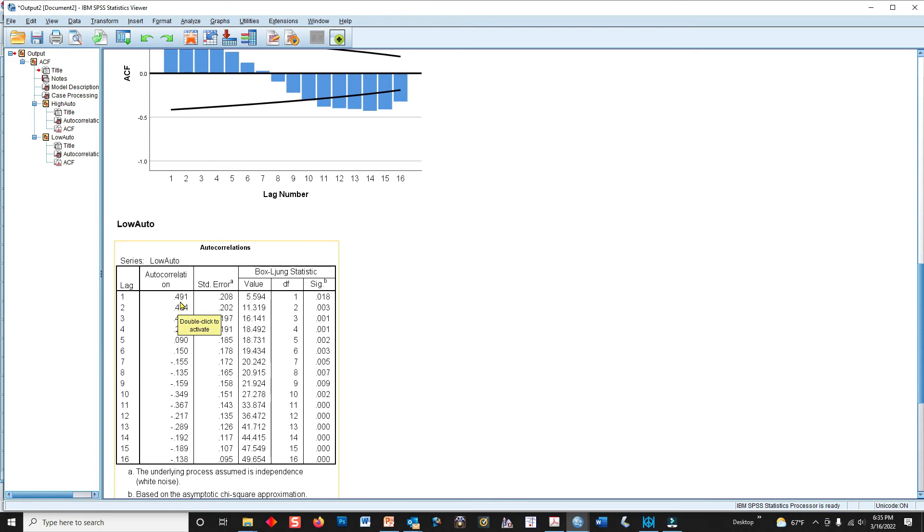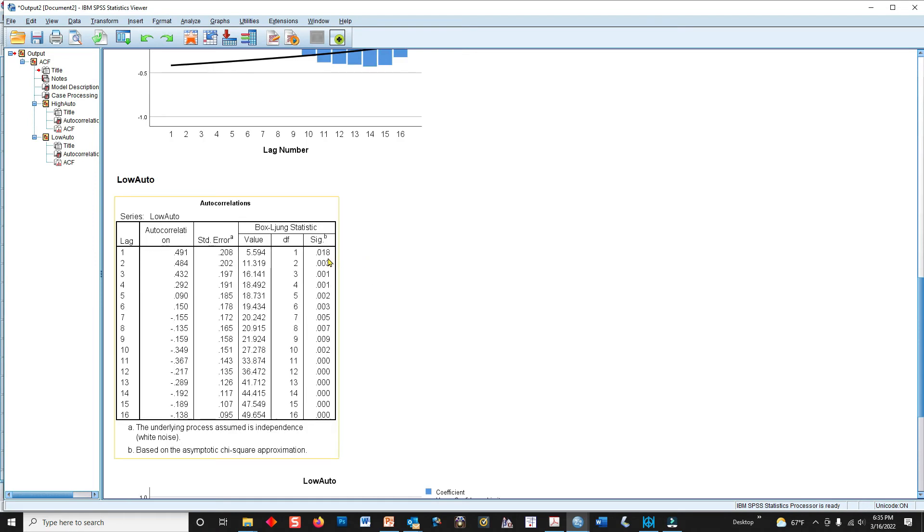For the low autocorrelation dataset, we have a relatively low value of 0.49. Now it tells us the significance value, but this is not the Durbin-Watson stat. You can see that it's got the superscript of b, and down here in the footnote it says, based on asymptotic chi-square approximation. Well, that's not the test that we want.